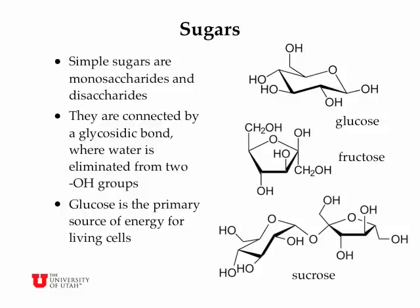Sugars — simple sugars — are either monosaccharides or disaccharides. Glucose and fructose are monosaccharides, which consist of five or six-membered rings with one of the members of the ring being an oxygen atom, and then various hydroxyl or methoxy groups hung off the chain. Sucrose is a disaccharide which is made from glucose and fructose, one molecule each, and they're bound together in a glycosidic bond which is formed by eliminating a water molecule from two OH groups. Glucose, the monosaccharide, is the primary source of energy for living cells.